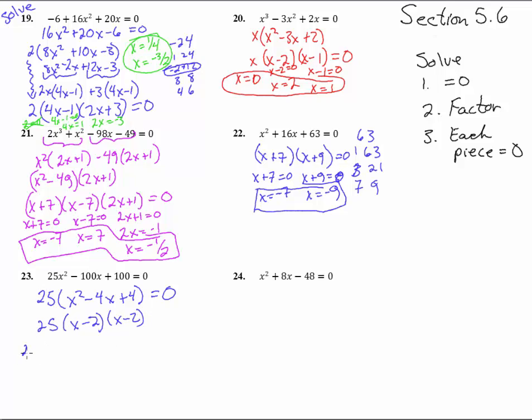Now set each piece equal to 0. 25 equals 0, oh well that was silly, don't write that guy down, that doesn't have an x. Now notice up here that will work when you have a variable on that greatest common factor. And this one, x minus 2 equals 0, that gives us x equals 2. This one will do the same thing, x equals 2. That just happened twice. So really we just have one answer that happened twice.